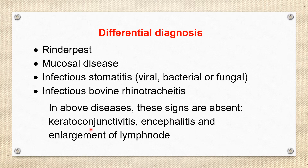The signs that are absent in those diseases are: keratoconjunctivitis with severe inflammation of cornea and conjunctiva, encephalitis and its symptoms, and characteristic enlargement of the lymph nodes. In some of those diseases there is lymph node enlargement, but it is not characteristic. For confirmation, serological and laboratory tests are helpful to differentiate these diseases.